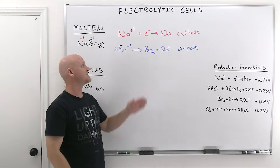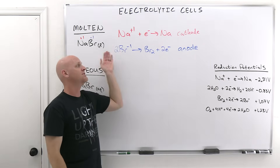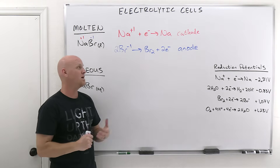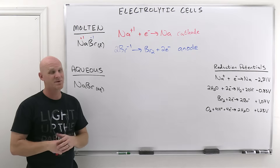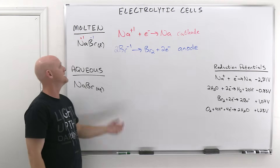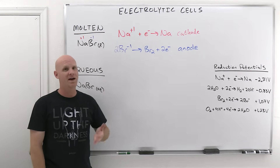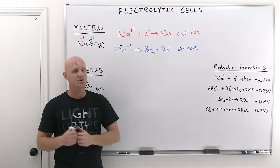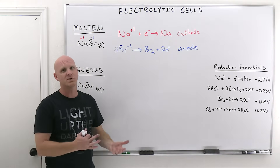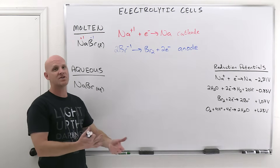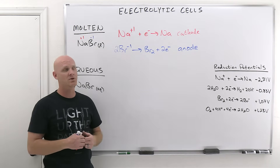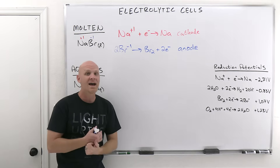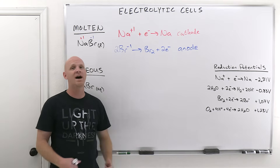This is really convenient for memorizing: the cation gets reduced at the cathode, the anion gets oxidized at the anode. Predicting the products for molten electrolysis of a binary salt is really easy. If you've got NaBr, you're going to make Na and Br₂ — diatomic bromine is its elemental form. The cation gets reduced at the cathode and the anion gets oxidized at the anode. There's no more guesswork than that.